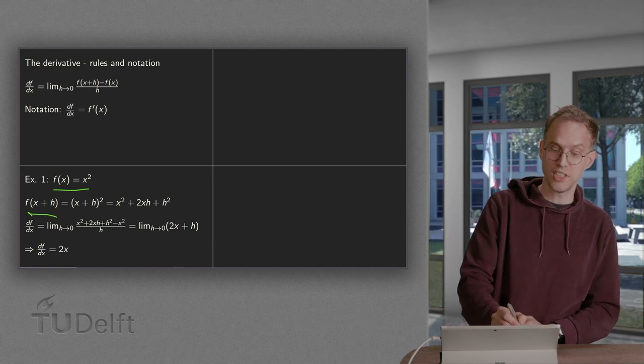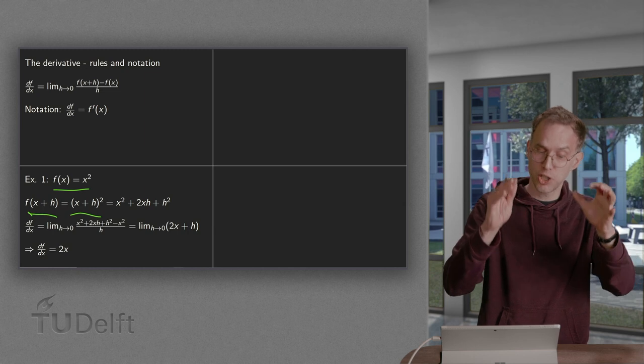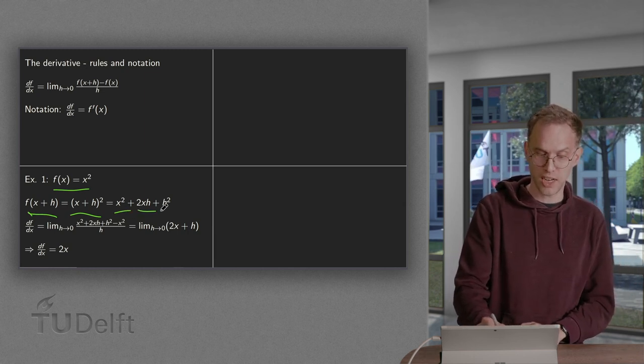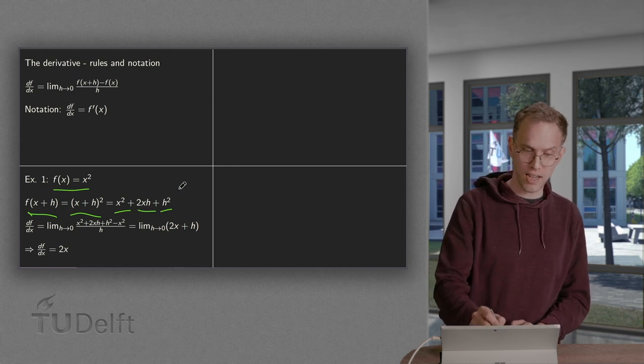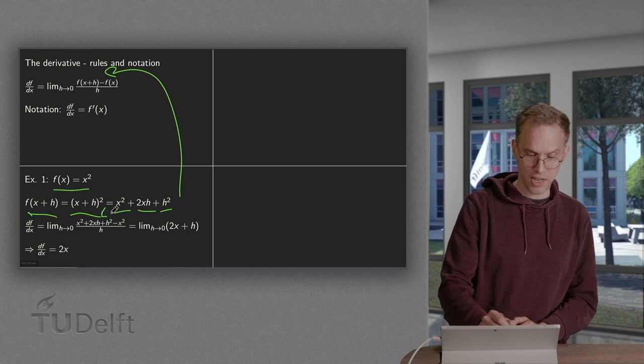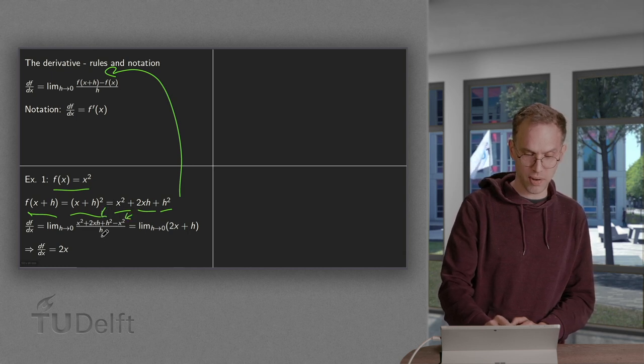And f at x+h equals (x+h)². And working out the brackets we get x² + 2xh + h². Now we put all of that into our definition. We get f(x+h) minus f(x) divided by h.